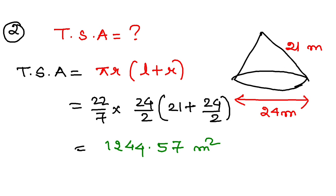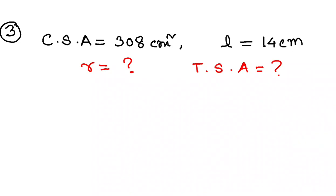Now let's go to question number 3. In question 3, the CSA of a cone is given as 308 centimeter square and slant height L is given as 14. You have to find the radius and the total surface area.